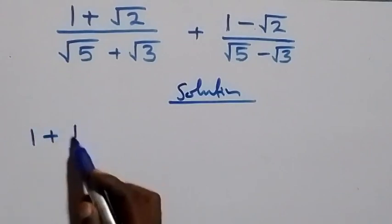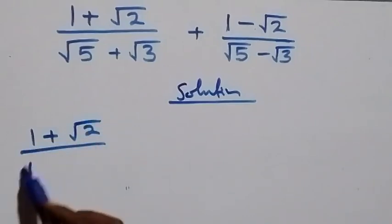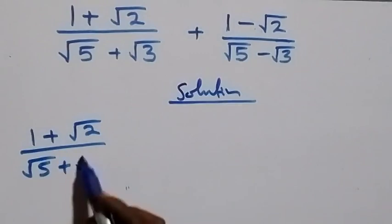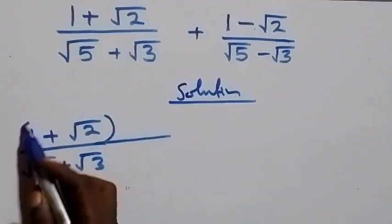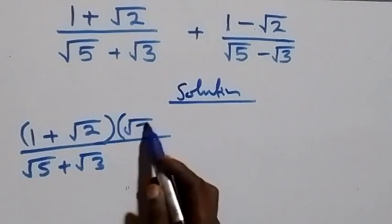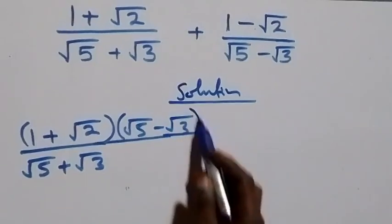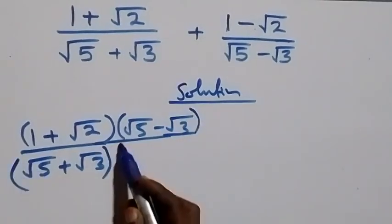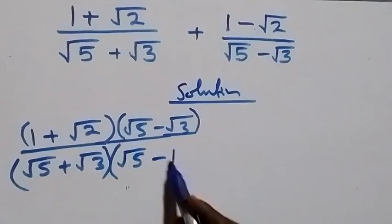From the first fraction we have (1 + √2) over (√5 + √3). To rationalize this, we multiply by the conjugate, which is (√5 − √3), both in the numerator and denominator.